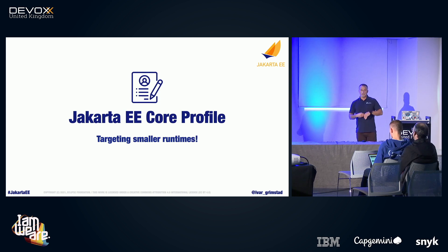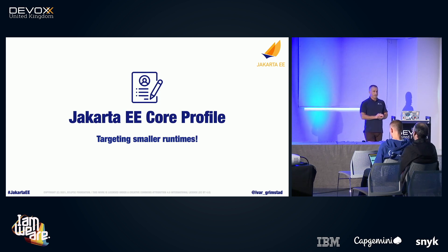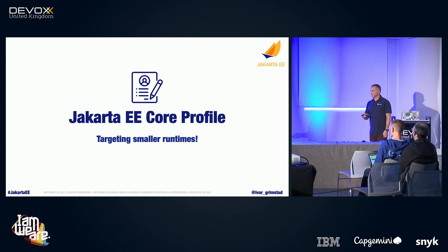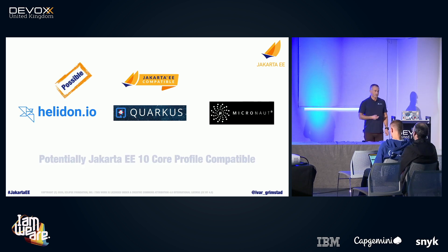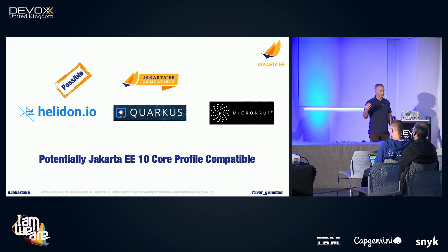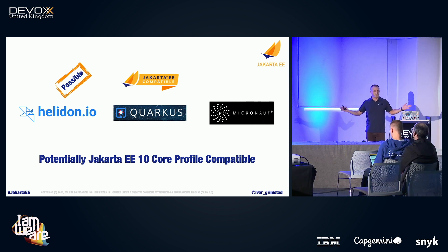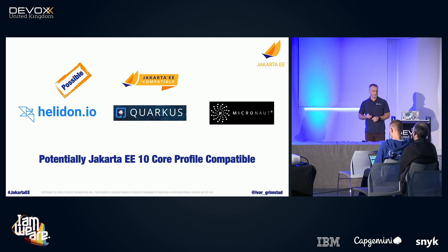The focus of the core profile is to give vendors the possibility to target smaller runtimes and still be able to certify on Jakarta EE. This opens up for potential products such as Helidon, Quarkus, or Micronaut to be potentially Jakarta EE compatible — which isn't possible today because the web profile is too large and those frameworks focus on the microservices aspect.